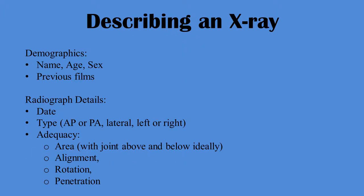When describing an X-ray, you want to confirm the age, the name, and the sex of the patient. Refer to any previous films if necessary. Look at the date the X-ray was taken, the type of X-ray and the adequacy, commenting on the area of the bone seen with the joint above and below ideally, the alignment, note any rotation, and lastly the penetration.